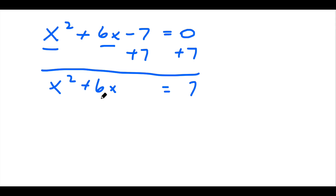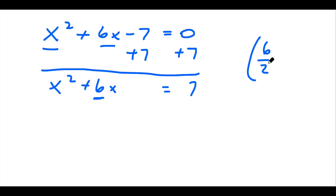Now what you want to do is you want to take the coefficient, the number in front of the x to the first term, and you want to divide that by 2 and square it. So we take 6 divided by 2, and we square that quantity. So that's going to be 3 squared, which equals 9.